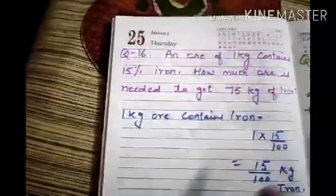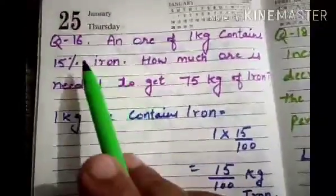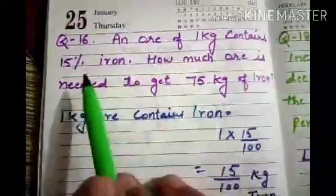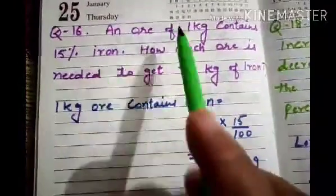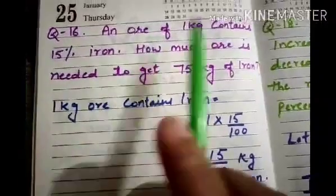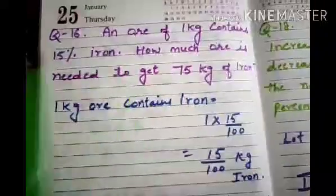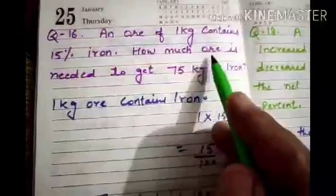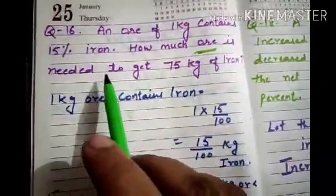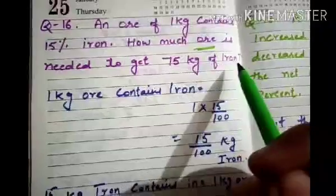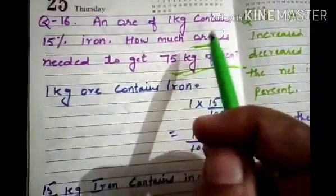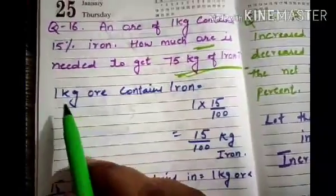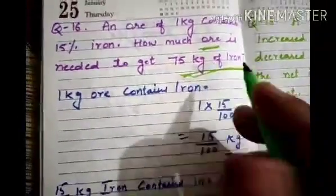Now let's do the next question, Question number 16. This is a very important question. An ore of one kg contains 15% iron. How much ore is needed to get 75 kg of iron? First of all, we note that one kg of ore contains 15% iron.